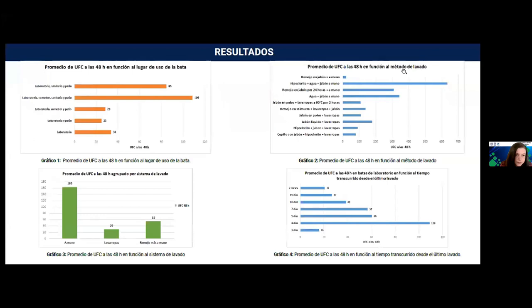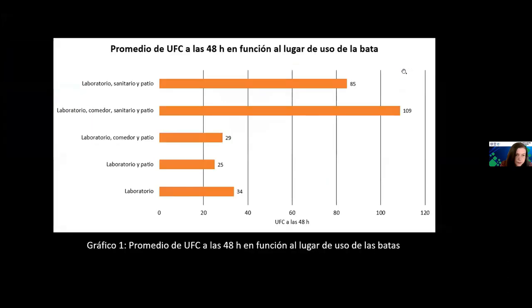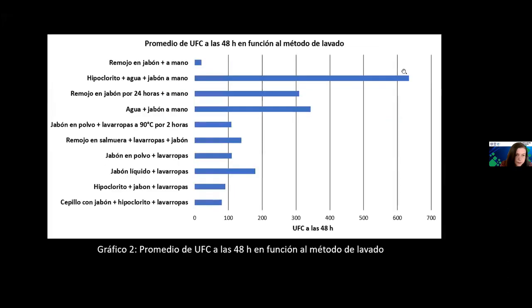Los resultados obtenidos se pueden observar en cuatro gráficas en función a diferentes preguntas. La gráfica 1 nos muestra el promedio de unidades formadoras de colonia a cuarenta y ocho horas en función al lugar del uso de la bata. El promedio mayor obtenido fue el uso de las batas en lugares como el sanitario y el patio. En el gráfico 2 tenemos el promedio de UFC a las cuarenta y ocho horas en función al método de lavado; el mayor promedio de UFC corresponde al método de hipoclorito más agua, más jabón, más lavado a mano.